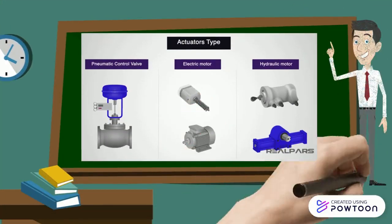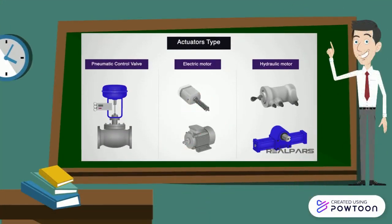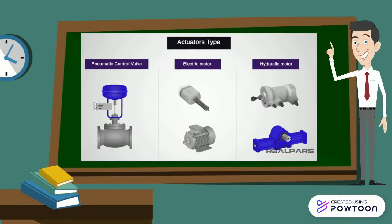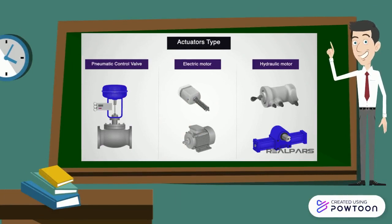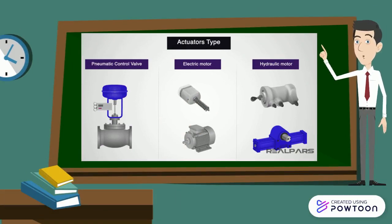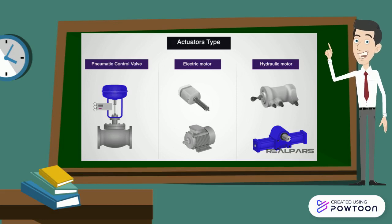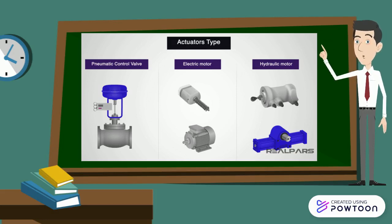Actuators are also a major part of automation, and they are divided into three types. The first is a pneumatic control valve, the second is an electric control valve, and the third is a hydraulic motor. Here we can see the parts of the actuator.